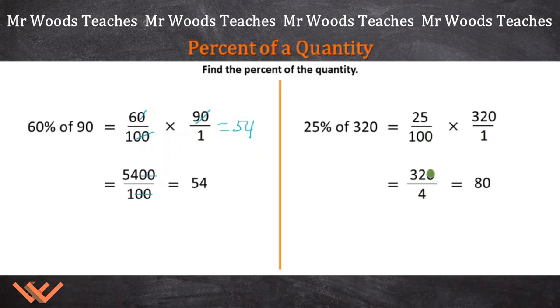But also, look at this. What is 32 divided by 4? Or 4 times what equals 32? If you recall, 4 times 8 equals 32. And then I have that 0 right here, so I have 80. So 32 divided by 4 is 8. Add that 0 and there's 80. Boom, we're done, and we get that percent of a quantity.